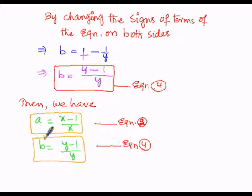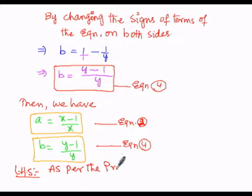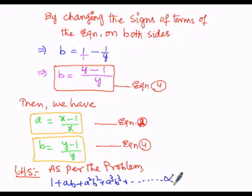As per the problem, we have to prove that 1 plus ab plus a squared b squared plus a cubed b cubed plus dash dash up to infinity equals xy divided by x plus y minus 1.